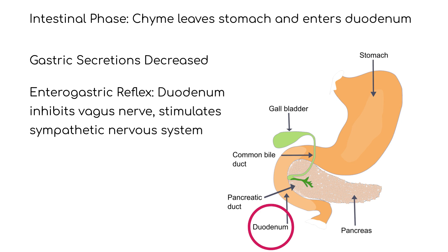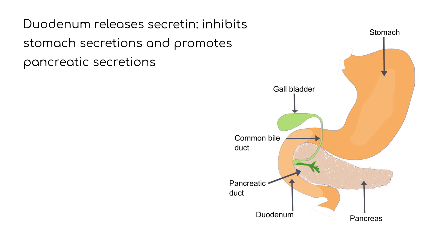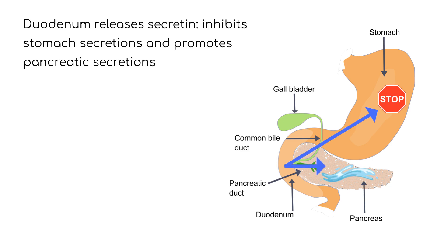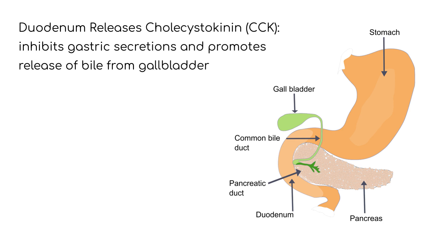This inhibits stomach secretions. The duodenum releases secretions which work to inhibit stomach secretions and promote the release of digestive substances from the pancreas. Cholecystokinin, or CCK, is also released by the duodenum, which works to inhibit gastric secretions. CCK promotes the release of bile from the gallbladder.